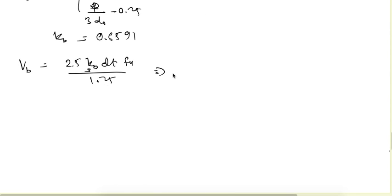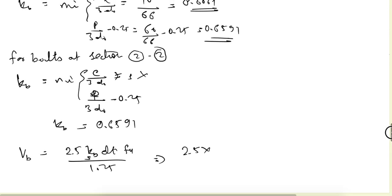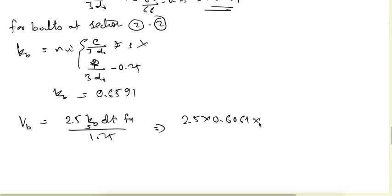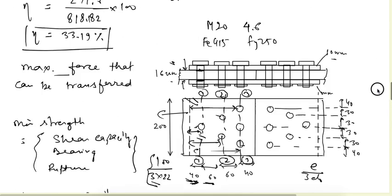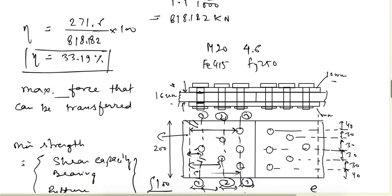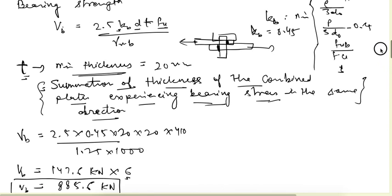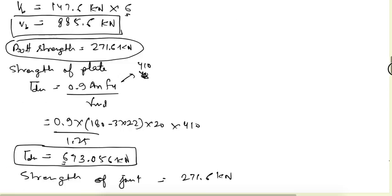For the first term, VB equals 2.5 into 0.6061 multiplied by D = 20. Now the value of T: T is the summation of thickness of the combined plates experiencing bearing stress in the same direction. Here, the cover plates experience bearing stress in the same direction, applied on the same side faces.